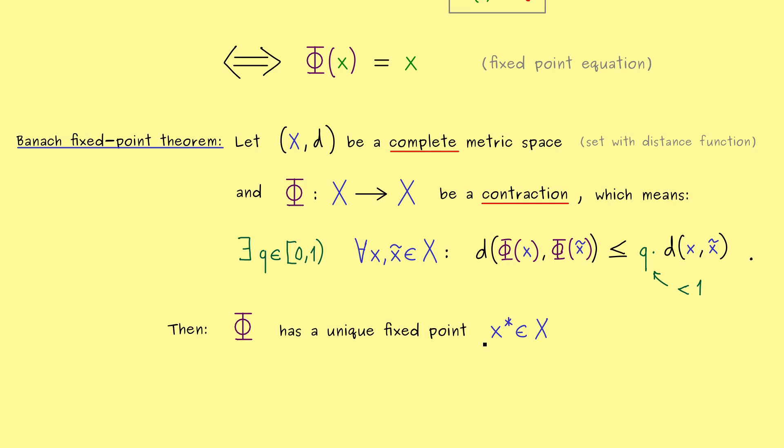And now the theorem tells us that phi has exactly one fixed point. And this unique fixed point we can just call x star. Moreover, the Banach fixed point theorem also tells us how we can find this fixed point x star. Namely, we just have to start with any point x0 from the metric space X. And then we can just do the iteration with the map phi. This means, if you use the composition with phi n times, you get a sequence in X. And this sequence is a convergent one with limit x star.